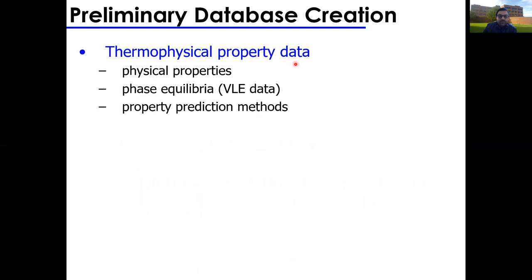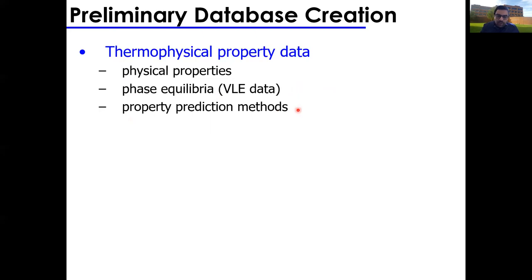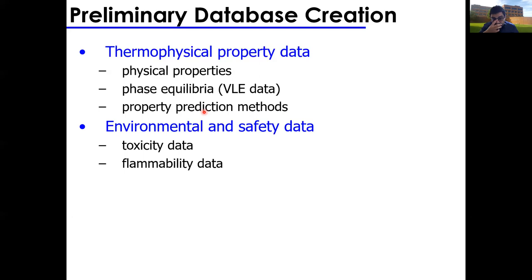Your preliminary database should contain all thermophysical property data: density, viscosity, surface tension, boiling point, and phase equilibrium — PT diagrams showing at what conditions a chemical is liquid or gas, and critical points. Also include property prediction methods: what's the best equation of state for this chemical? Does Peng-Robinson work, or should you use SRK for oil and gas, or another equation of state for an ionic liquid? You need to find the best method to predict or extrapolate thermodynamic data.